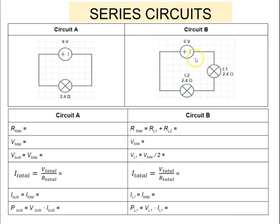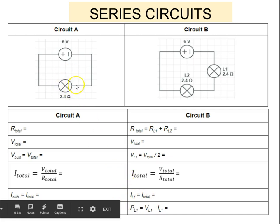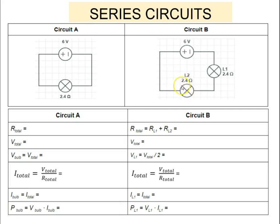Now we have calculated the watts for the light bulb in Circuit A and also the power for the light bulb in Circuit B. Take a moment to compare and contrast those numbers, then answer the question using your numerical evidence — use the power calculated for Circuit A and the power for Circuit B and explain why the brightness of the light bulbs is different. This is a good time to pause and write that answer before we go on to the parallel circuit.